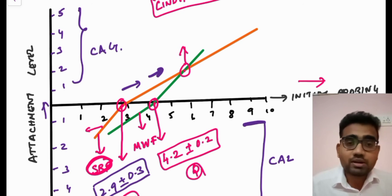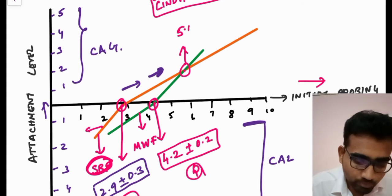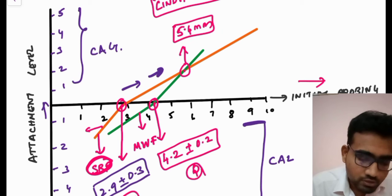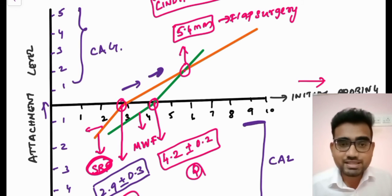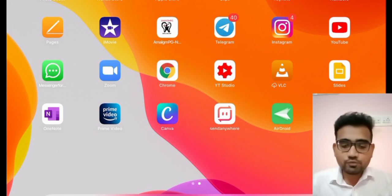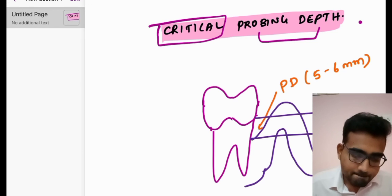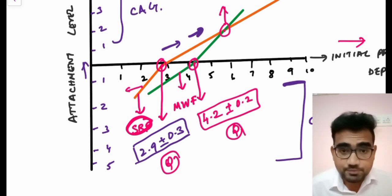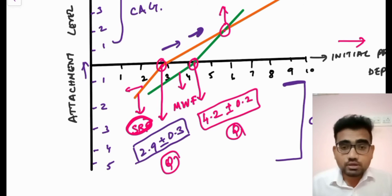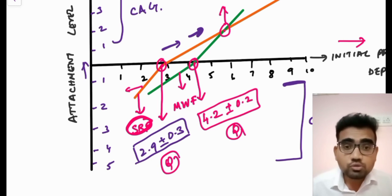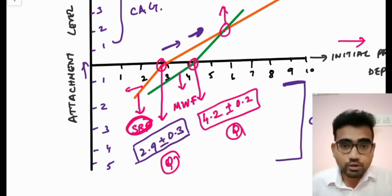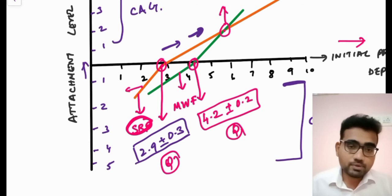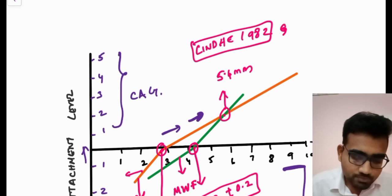The point where the SRP line and the modified Widman flap line meet on the graph is the critical probing depth for any flap surgery in general, which is 5.4 mm. So if a patient comes to you with a probing depth of 6 mm, they are definitely a candidate for flap surgery — more than 5.4 mm means the patient goes for flap surgery. If the patient comes with a probing depth of 4 mm, you can do SRP but you cannot do flap surgery, because the CPD for flap surgery is 5.4 mm and for modified Widman flap specifically it is 4.2 mm.